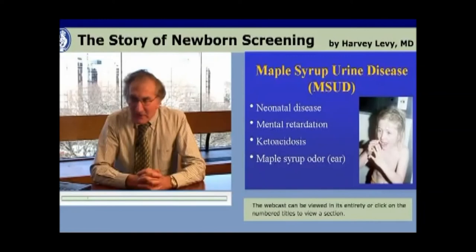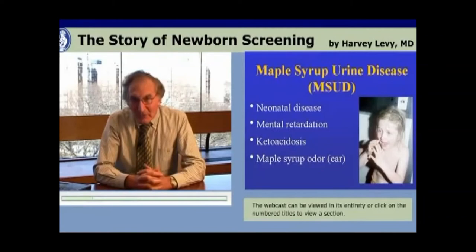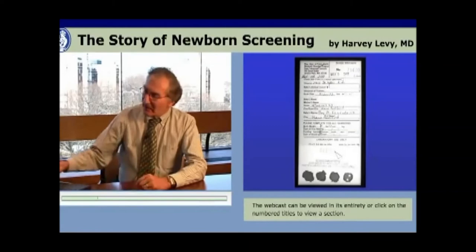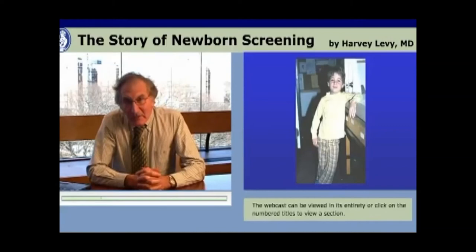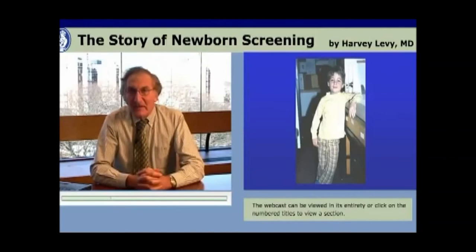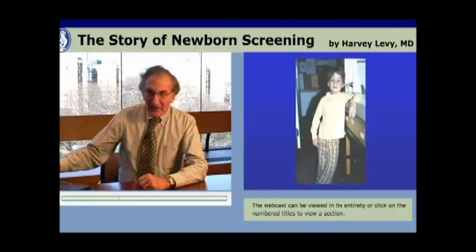Maple syrup urine disease was suggested as one of those diseases — a neonatal disease that causes mental retardation and severe ketoacidosis, with the characteristic maple syrup odor prominent in the ear. There was plenty of blood remaining in the newborn specimen after one or two discs were removed for PKU screening. Guthrie developed a bacterial assay — a modification of his PKU assay — that responded to leucine, the amino acid elevated in maple syrup urine disease. Babies with the disease were discovered in screening programs that added the leucine assay. Here is a picture of Paul with maple syrup urine disease discovered through newborn screening — a bit of a wise guy, but certainly not mentally retarded.